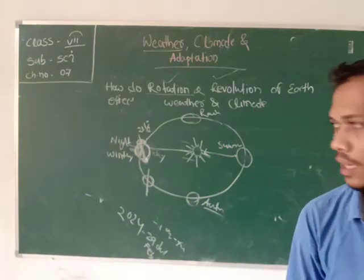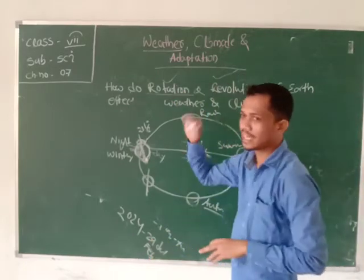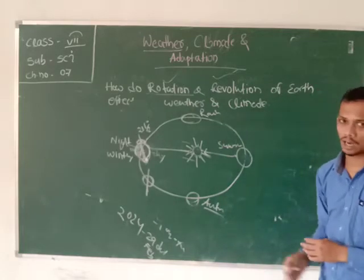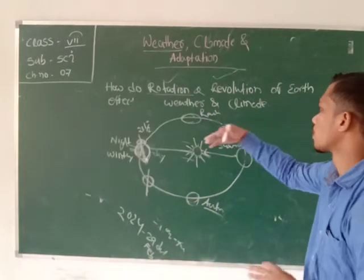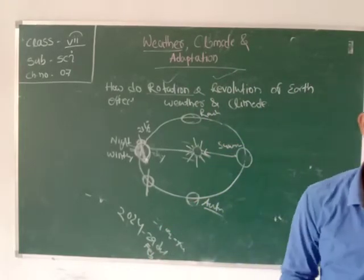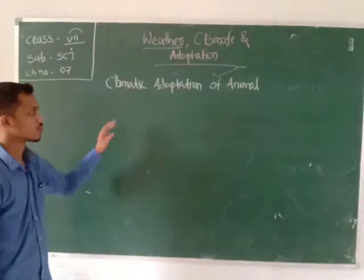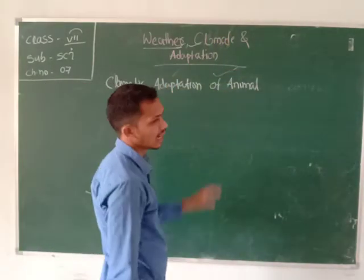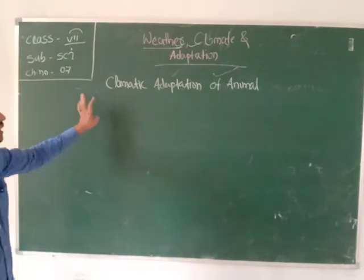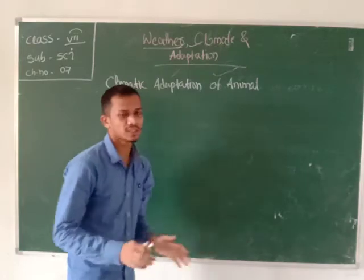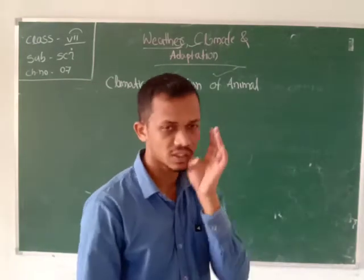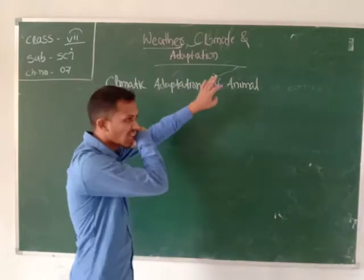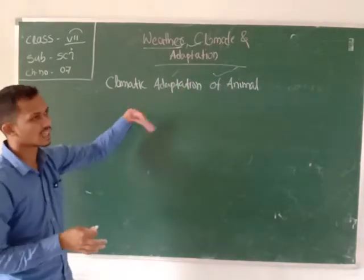So, the rotation of the Earth causes day and night, and the revolution of the Earth causes seasonal changes. Today we have covered the discussion about weather and climate. Now it is time to discuss adaptation. During the climate study we recognized some regions — for example, Jammu and Kashmir is called a snowy climate and Chennai is called a humid climate.